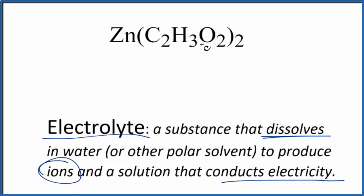For zinc acetate, we have a metal and a group of non-metals. This is an ionic compound, so we'll have ions, but will it dissolve in water and dissociate so the ions will be able to conduct electricity?